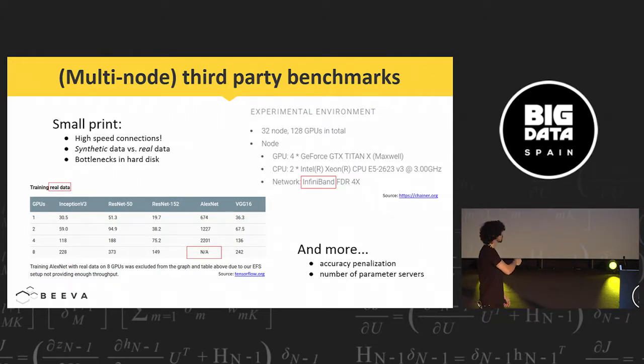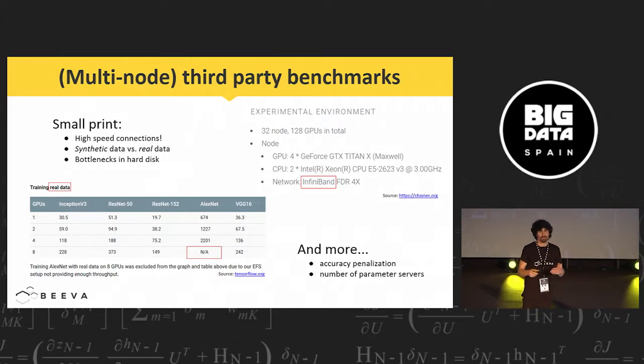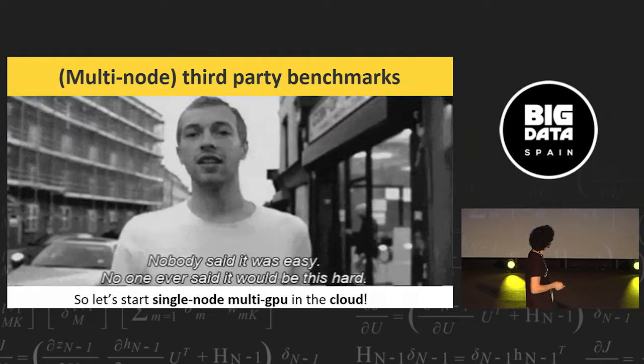And finally, there are even more topics to take into account, like the possible accuracy penalization when we distribute. Some advice: don't scale unless you need to or don't distribute unless you need to, and sometimes it happens. Also, the number of parameter servers, the parameter server as known in TensorFlow, for instance, is very important when you are distributing TensorFlow, tuning or choosing a good number of parameter servers. It's not the same if you choose a number that is even or odd or even a prime number. It seems curious, but it has a huge difference, the category of the number. This is something that you can see very explicitly in the documentation. So nobody said it was easy. No one ever said it would be this hard. Actually, it's quite hard.